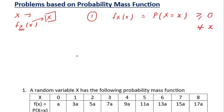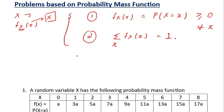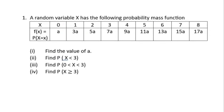The second condition is that the summation over all possible values of x of all the probabilities must equal 1. These are the two conditions for a function to be a probability mass function. Now, the first question: a random variable X has the following probability mass function. X is a discrete random variable because its values are not defined over an interval — they are defined at distinct points.